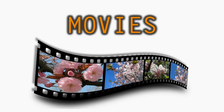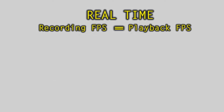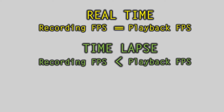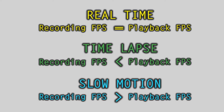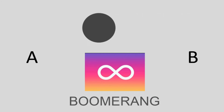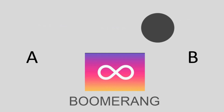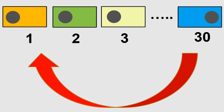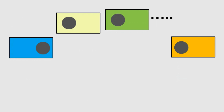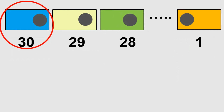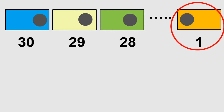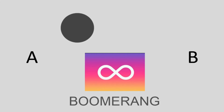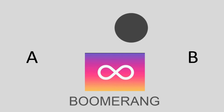Here's a summary: in real-time movies, recording frame rate equals playback frame rate. In time-lapse movies, recording frame rate is less than playback frame rate. In slow-motion videos, recording frame rate is greater than playback frame rate. There's also an app called Boomerang that makes videos go forward and then reverse in time — it takes the recorded frames and completely flips them around, so the first frame becomes frame 30 and the last frame becomes frame 1. Then it plays the original video and the frame-flipped video all in time-lapse and keeps looping this process.